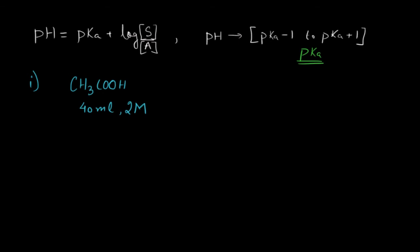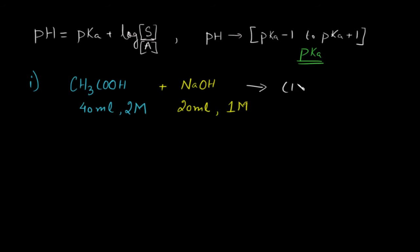We have added NaOH to the acetic acid solution. Let's say the NaOH added is 20 ml and 1 molar. We know that acetic acid will react with NaOH to give CH3COO- salt plus water. This is a typical acid-base reaction: acid plus base gives salt and water. This is a balanced reaction, so it will react in a 1:1 mole ratio.